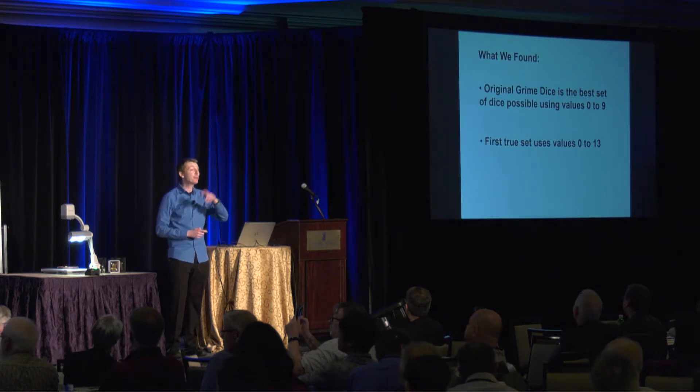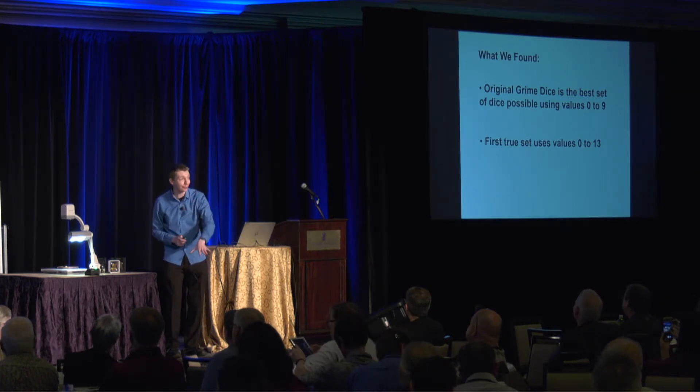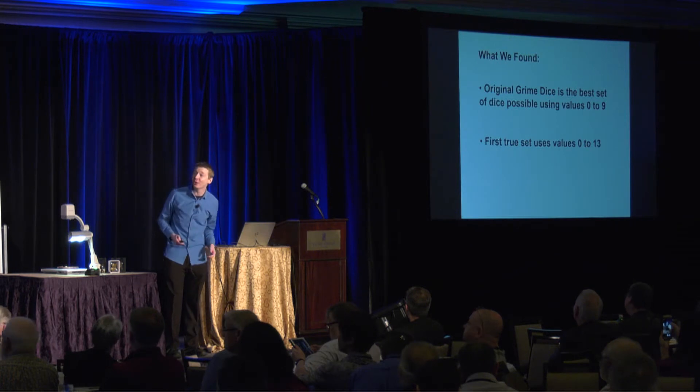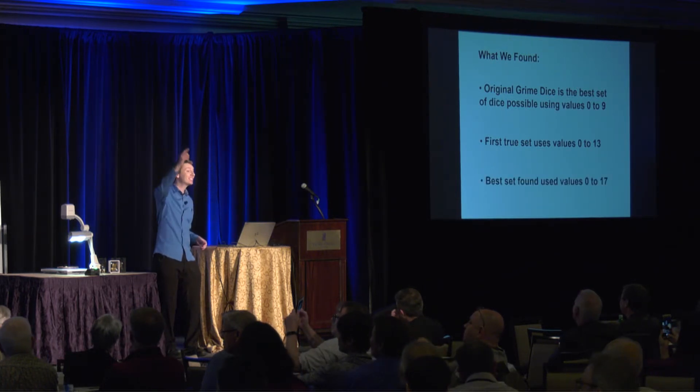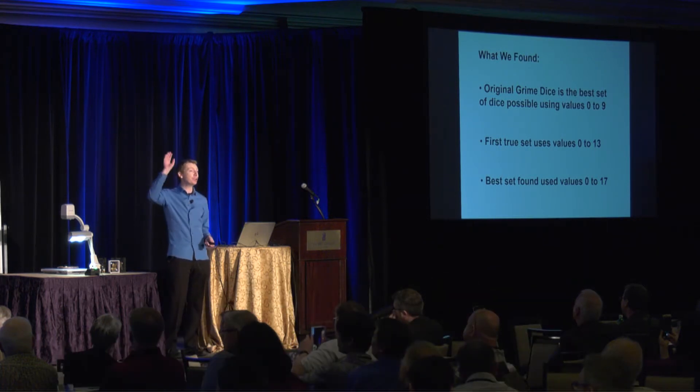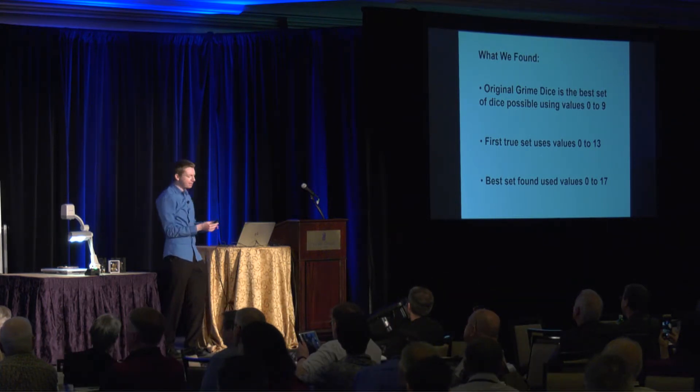So it's not like I missed something. But the first true set used values from zero to 13, and they are rubbish. The probabilities are all really close to 50%. It would be a terrible game. So we continued looking. The best set we found used values from zero to 17. After that point, the probabilities kind of plateaued. They didn't get any better.